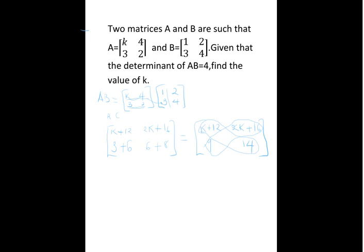So, now we take the main diagonal, this is 14 multiplied by K plus 12, then we minus the minor diagonal, which is 9 multiplied by 2K plus 16. This one should give us 4, because the determinant is given as 4.